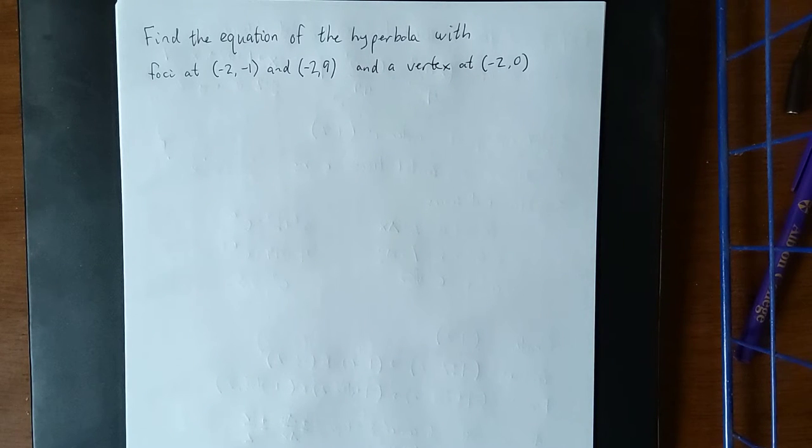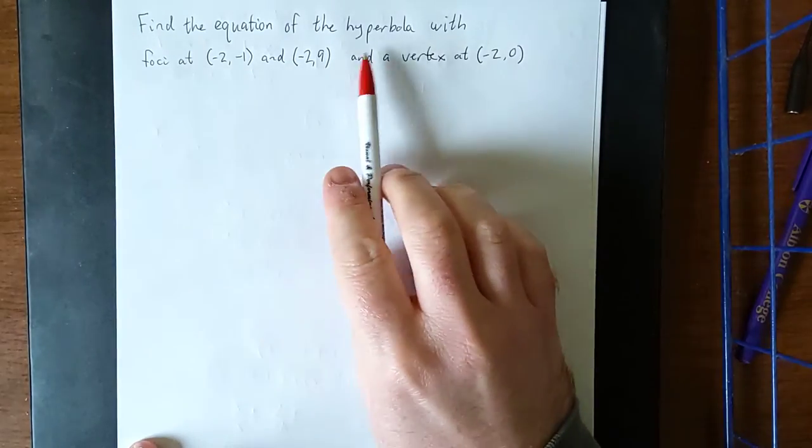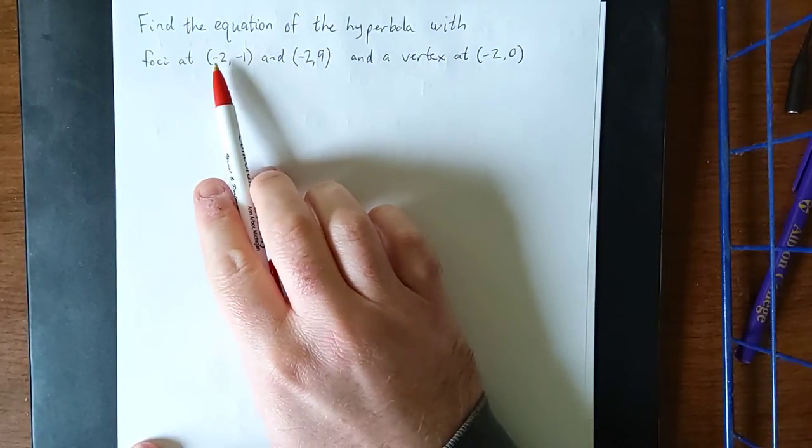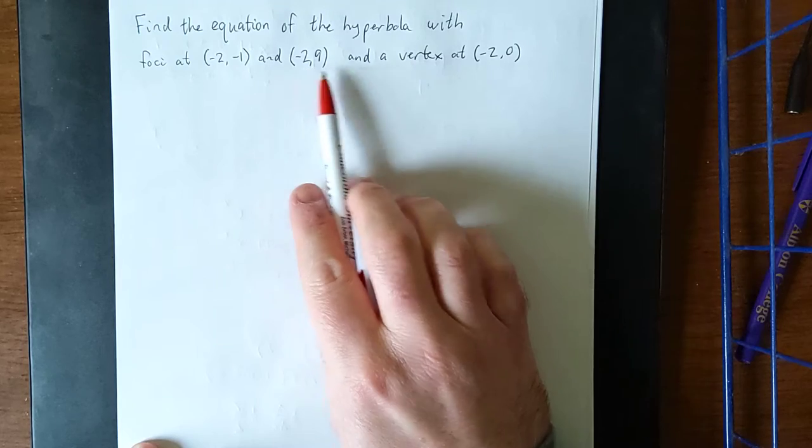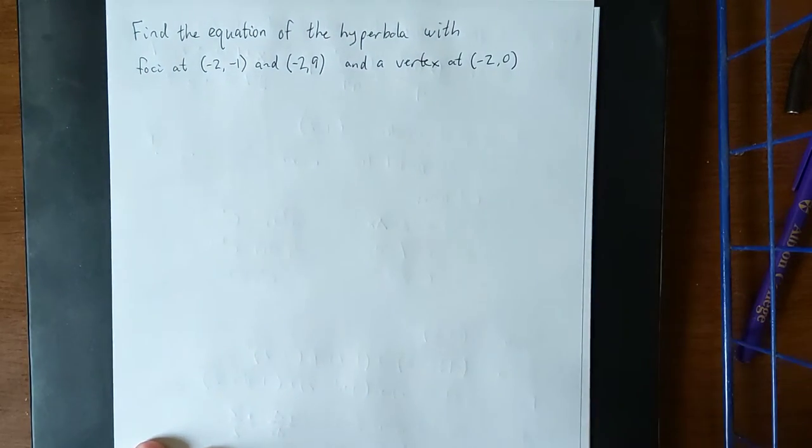In this example we're going to be given several graphical aspects of a hyperbola and we're going to try to find the equation of the hyperbola. We're finding the equation of the hyperbola with foci located at (-2, -1) and (-2, 9) with a vertex at (-2, 0).